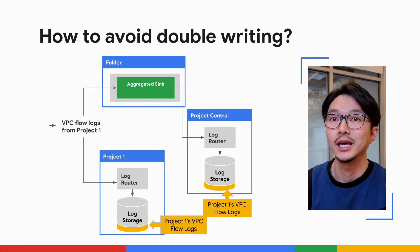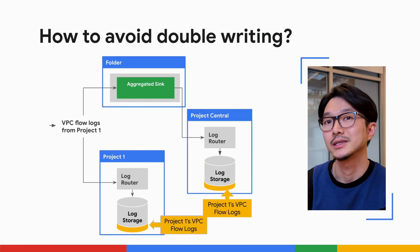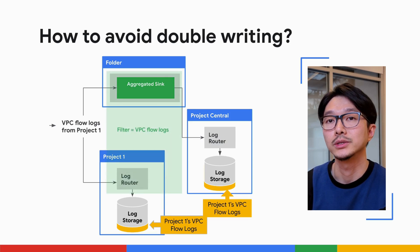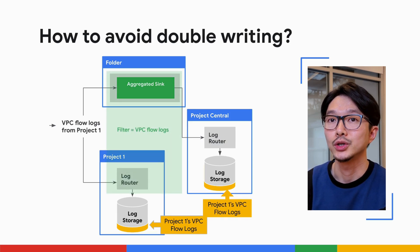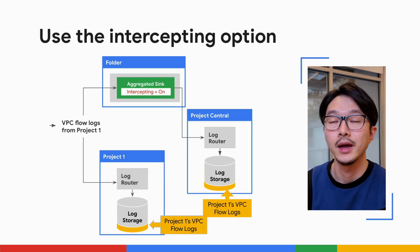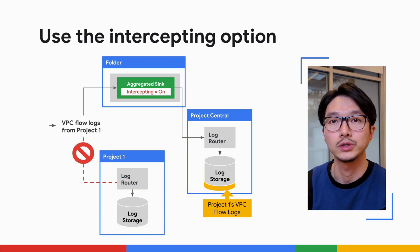With aggregated sinks, it's possible to accidentally write logs twice, leading to extra cost. This happens when your project-level sinks overlap with those at your folder or organization level. One option to prevent this kind of overlap is to use the intercepting option in aggregated sinks. This feature stops selected logs from going back to the source project, preventing double storage.